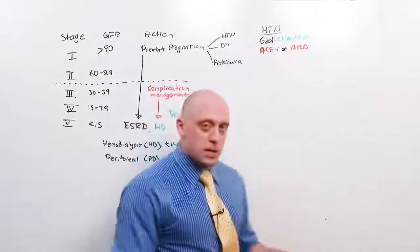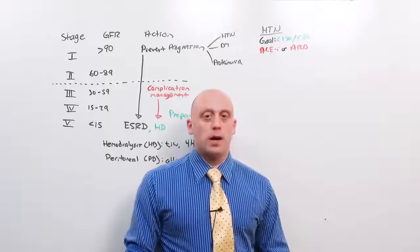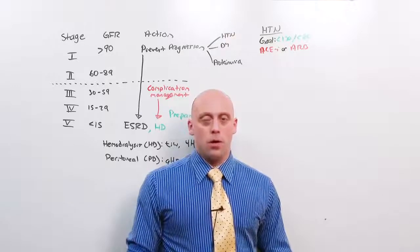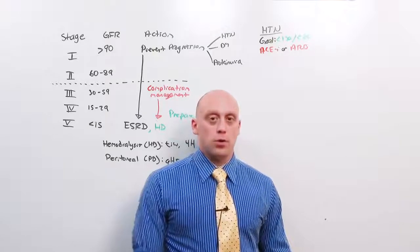There used to be this combination of the two to prevent proteinuria. Don't do it. Pick either an ACE or an ARB in your blood pressure management, trying to get a goal of 130 over 80.